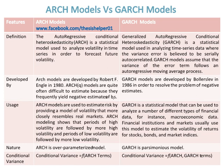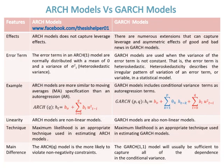The conditional variance of GARCH models is equal to functions of ARCH and GARCH terms. ARCH models do not capture leverage effects. Whereas there are numerous extensions that can capture leverage and asymmetric effects of good and bad news in GARCH models.